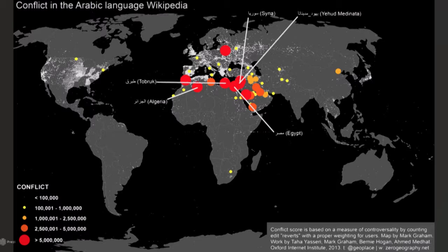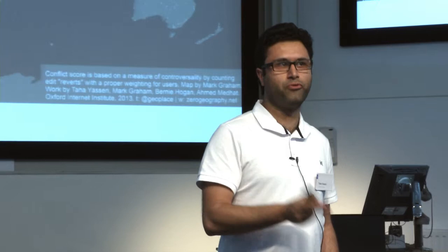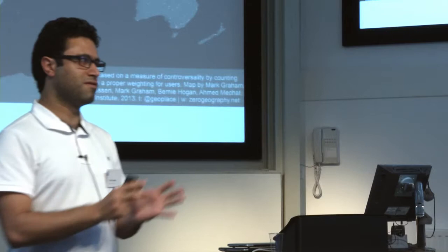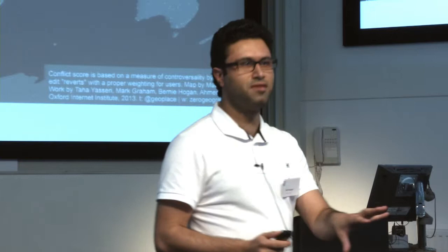This data was fetched in 2010, and it also tells us some stories. In Arabic Wikipedia, Algeria, Egypt, Syria, and Tobruk — a city in Libya — had all been very controversial already in 2010. I'm sure you know what the Arab Spring is, which started almost a year after. I'm not trying to make a very strong statement, but there are signals among all this noise in Wikipedia. If you want to predict when and where the next social unrest will be, this might be something worth looking at.